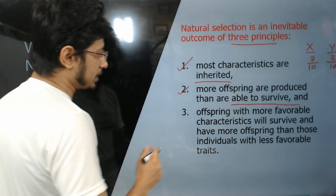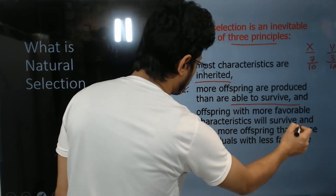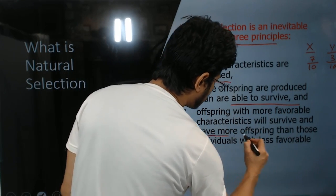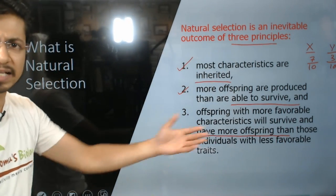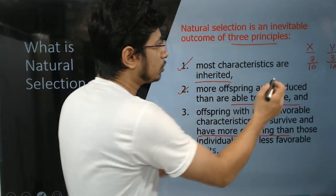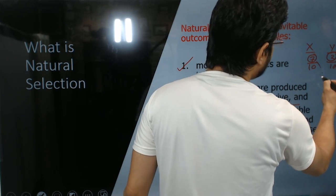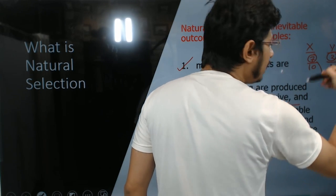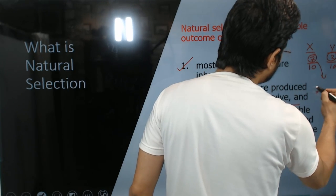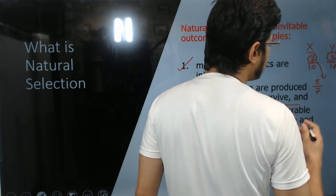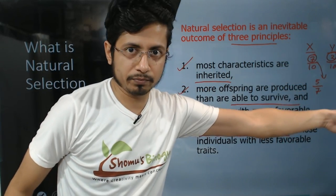The third important principle is that offspring with more favorable characteristics will survive and have more offspring of their own in future times. That's quite logical — among those who survived, they will reproduce and make more. Out of the seven that survived, they will also produce more offspring that will survive. These are the three principles and the whole idea of natural selection is based on them.